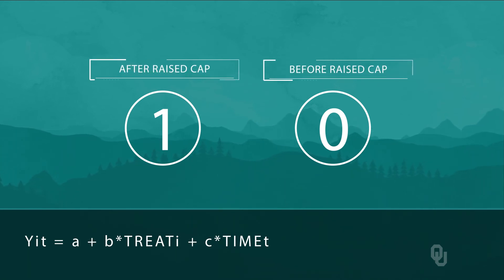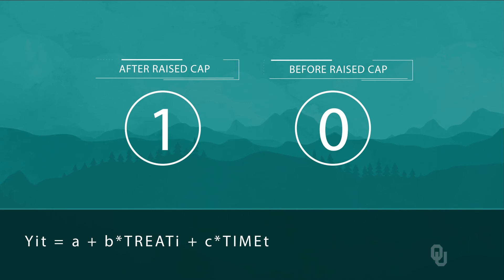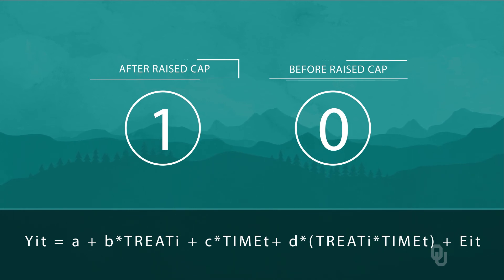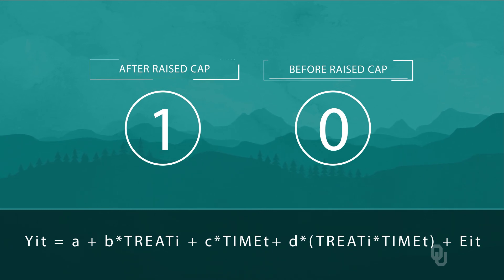The exact form of the regression is: Y_IT = A + B × Treat_I + C × Time_T + D × (Treat × Time) + E_IT, where E_IT is the random error term. The coefficient D gives us exactly the difference in differences estimate of the treatment effect. Beyond this basic setup, researchers will often add time-varying control variables for things like weather, the state of the economy, or seasonality. But the classic diff and diff effect can be estimated with just this simple regression.